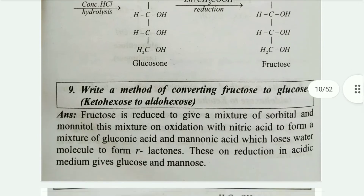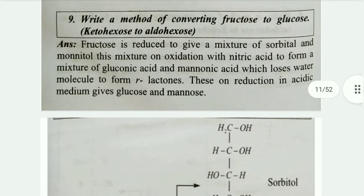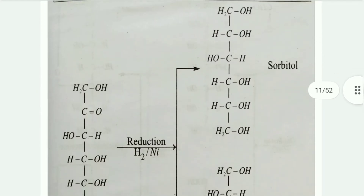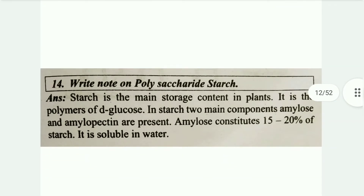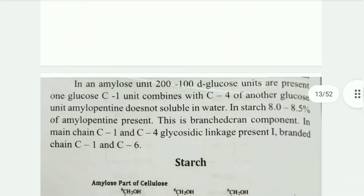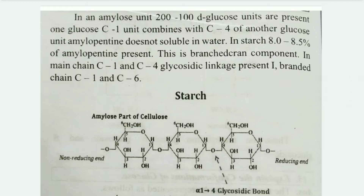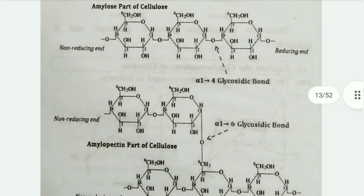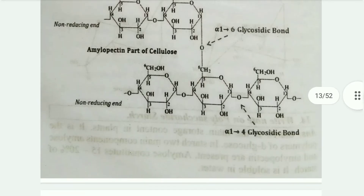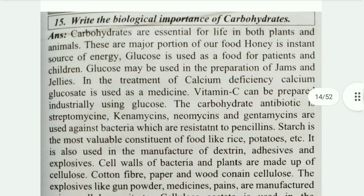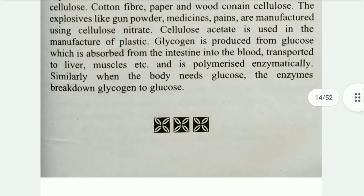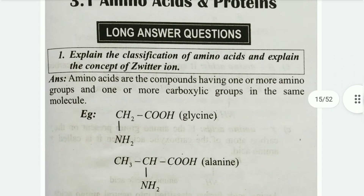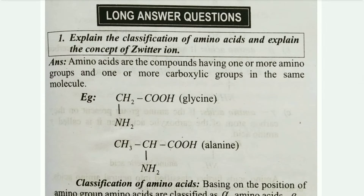Write a method of converting fructose to glucose — ketohexose to aldohexose. Then write a note on polysaccharides and starch. Also, botany students have their own 15 most important questions coming. Write the biological importance of carbohydrates — very easy question. Moving to amino acids and proteins: first important question is to explain the classification of amino acids.